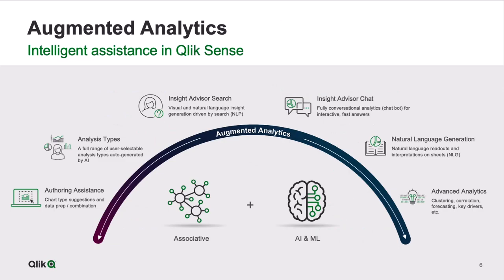We combine our associative engine with AI and ML, and this is where it gets really interesting — to provide that full suite of augmented analytics capabilities in Qlik Sense. That includes things like assistance with data combination, chart type suggestions when you're authoring, our new analysis types capability which gives you the ability to generate those automated insights in just a few clicks, our search capability which is natural language-driven insight generation, Insight Advisor Chat for less sophisticated users that just want fast answers, NLG on a sheet so you can add the NLG object directly to your sheets, and a whole range of advanced analytics including clustering, correlation, forecasting, and more.